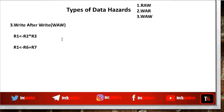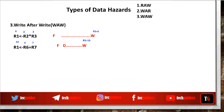Next is write after write data hazard. Consider these two instructions — we are expected to write to register r1 once the write to r1 by instruction i1 is completed. So i1 should write to r1 first, then i2 should write to r1. But by making use of parallelism approaches such as pipelining, suppose instruction i2 completes its execution first. Then i2 will write the value 13 to r1, and then instruction i1 will write the value 6 to r1.